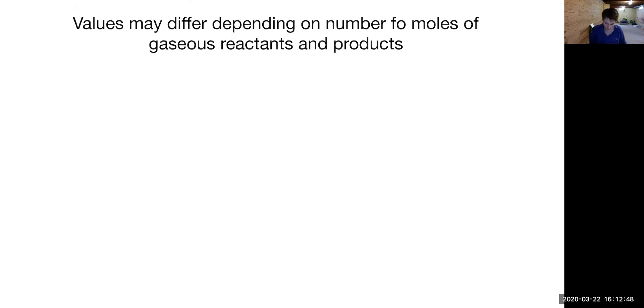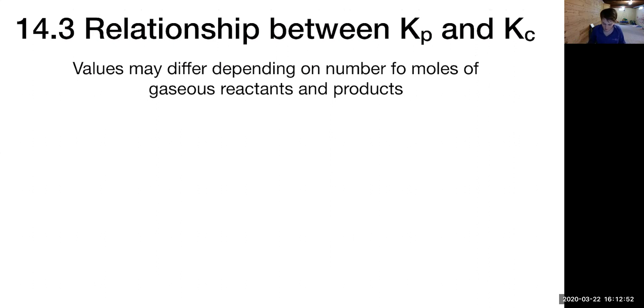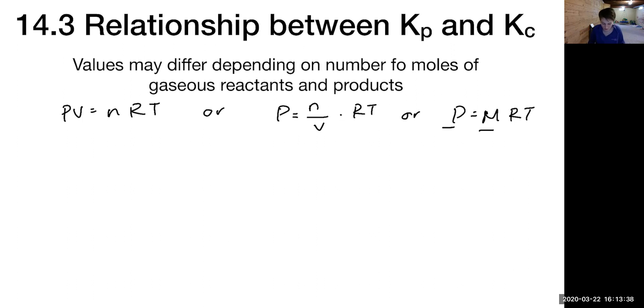So I want you guys to think about way back to the beginning of the semester. We talked about PV equals NRT. So PV equals NRT or if I rearrange it, I could say P equals moles over volume times RT or I could say pressure equals molarity times RT. Now in this way you can see that pressure and concentration are directly related. Values may differ depending on the number of moles of gaseous reactants and products.